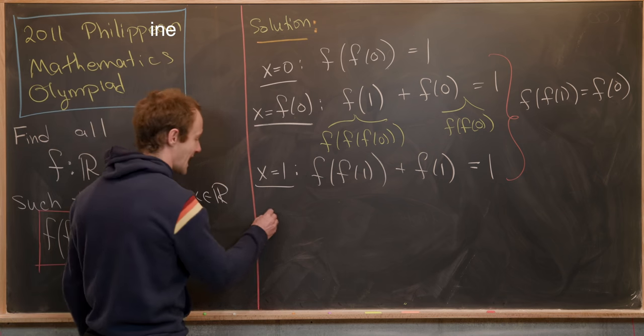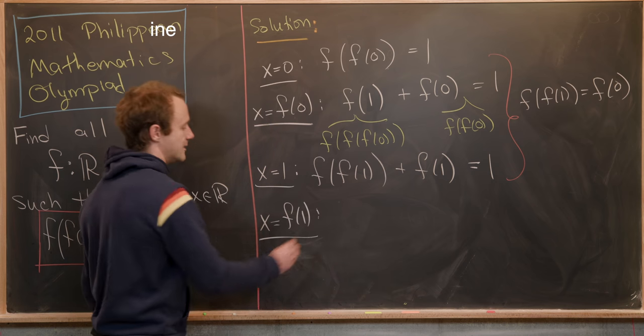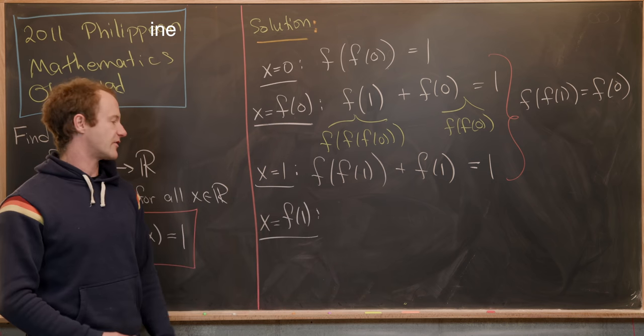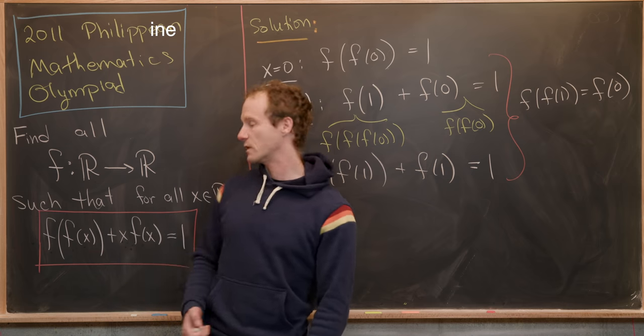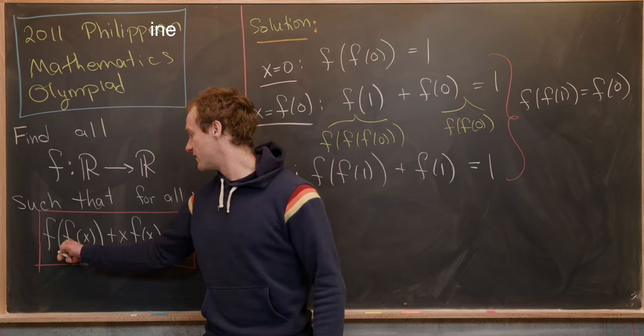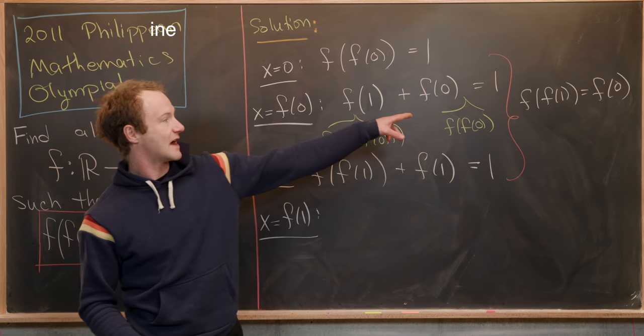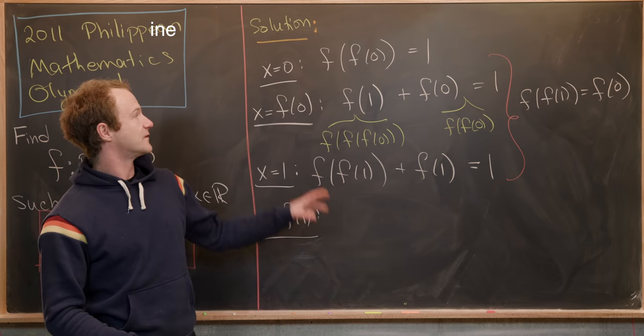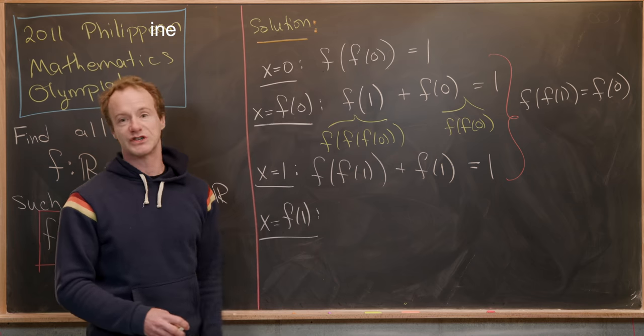So let's see what we get throwing that into our functional equation. So our first object will be f(f(f(1))). But notice f(f(1)) is 0. So in fact, it's just f(f(0)), which is 1.